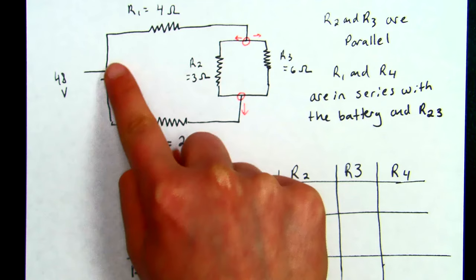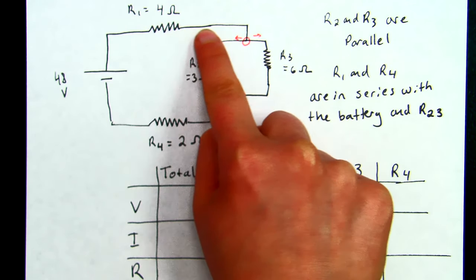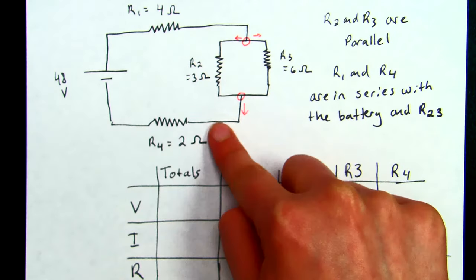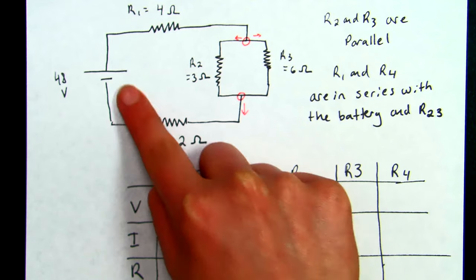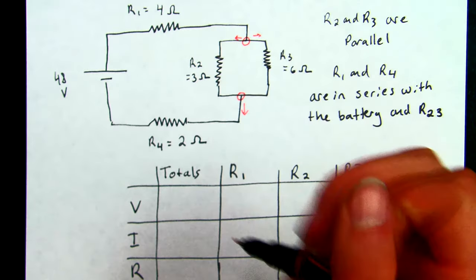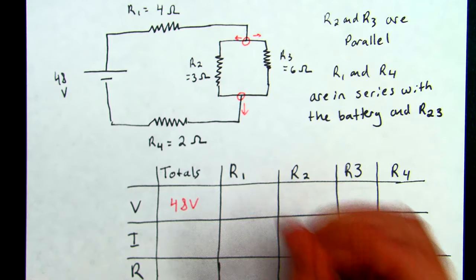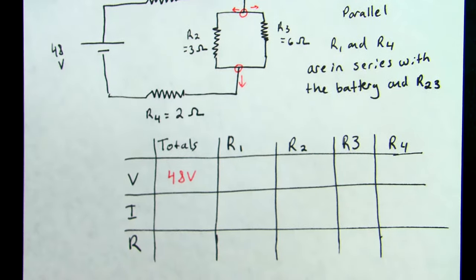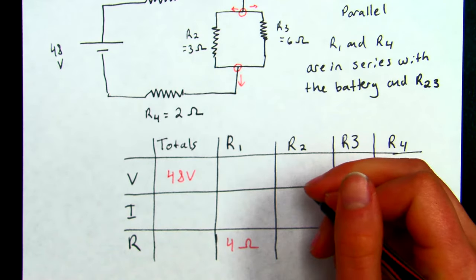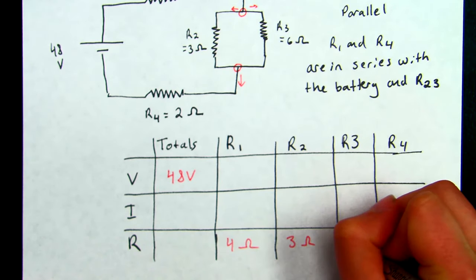So we would say that R1 and R4 are in series with both the battery and this combined parallel branch. Because once we leave the battery, we have to go through R1, then we have to go through this branch, and then we have to go through R4 again in order to get back to our battery. So once again, we're going to start with the information that's given, which is typically going to be your voltage and your four resistors for this circuit.